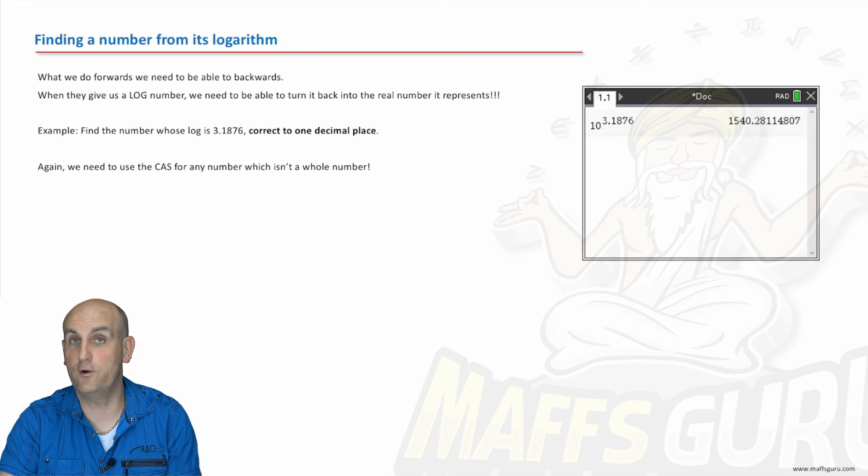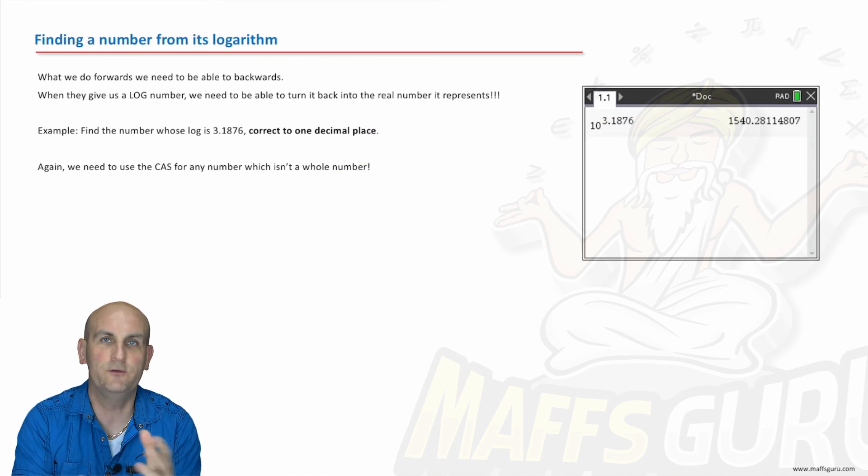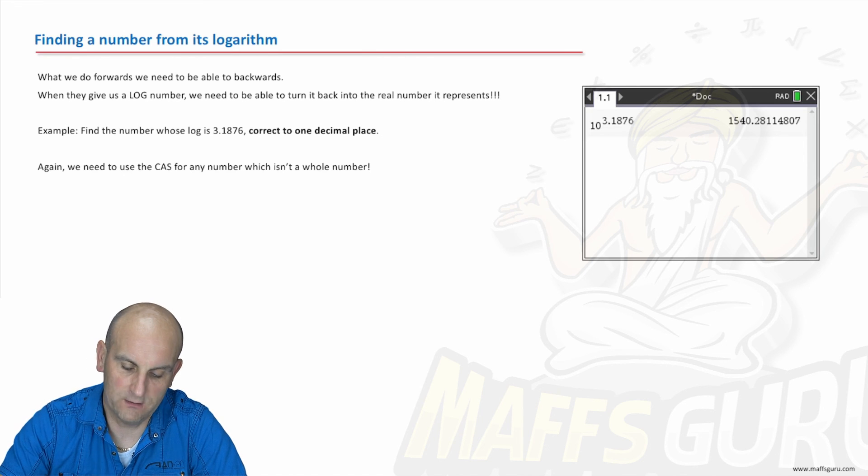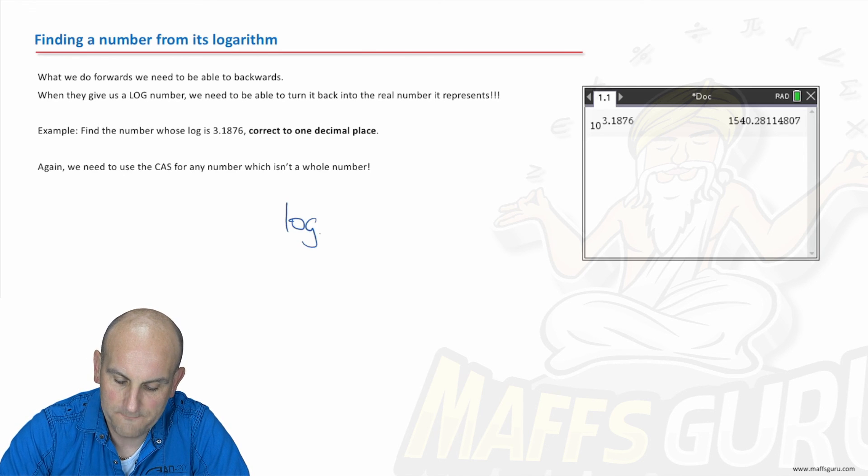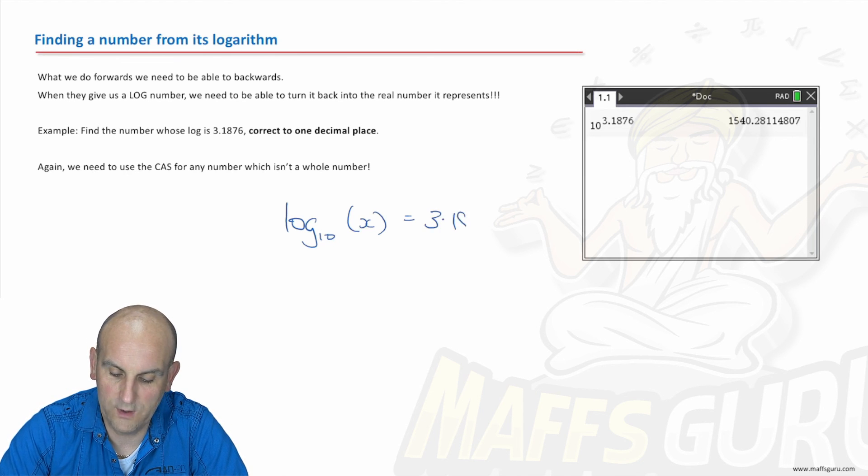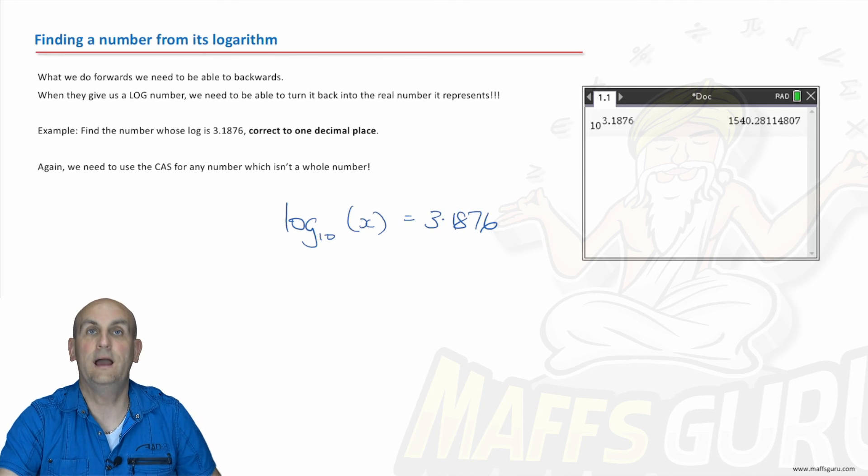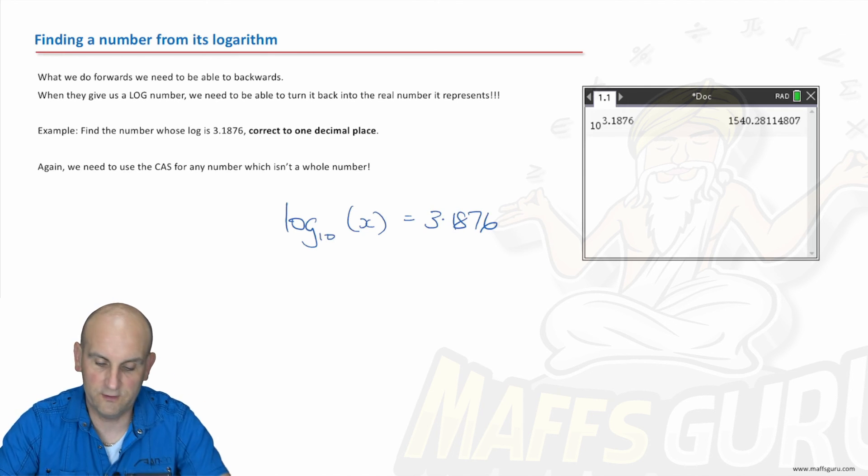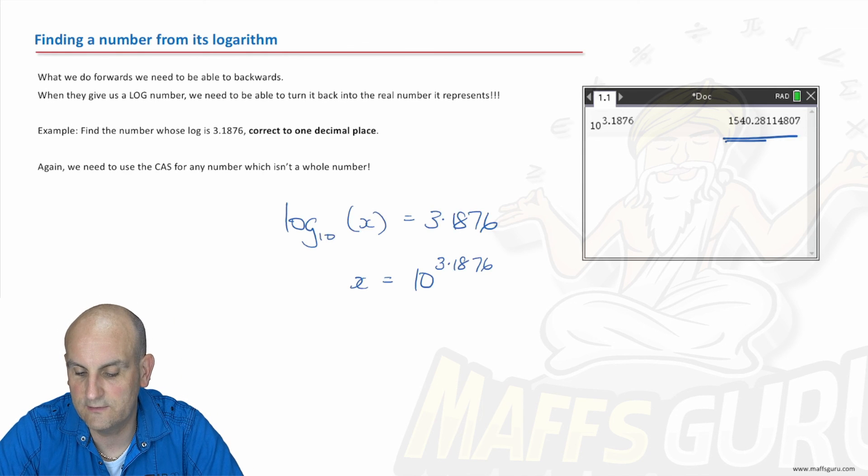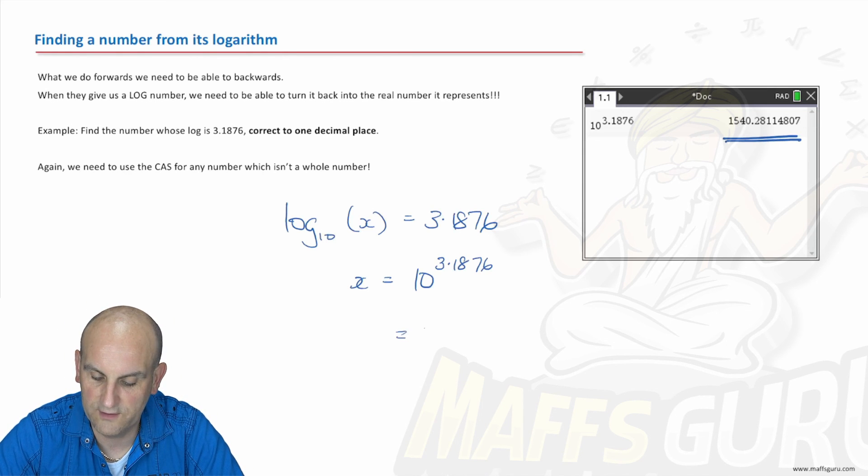What about finding a number from its logarithm? Well, I've just been talking about that. That's why I've been talking about this and doing it backwards. So for example, we've got a question here. Find the number whose log is 3.1876. So we've got the log base 10 of some number, let's call it X, is equal to 3.1876. Well, how do I get X on its own? What I'm trying to find the value of X. Well, we now say that X is equal to 10 to the power of 3.1876. I've put that into my calculator and lo and behold, out comes the value of 1540.28.